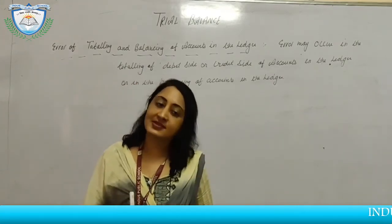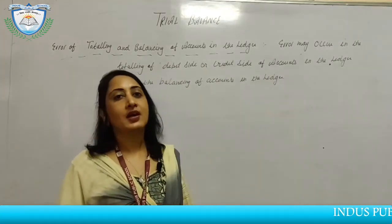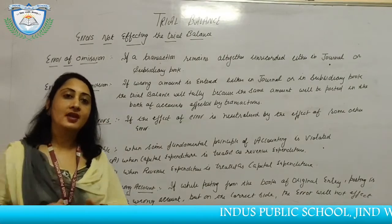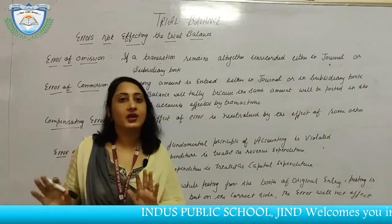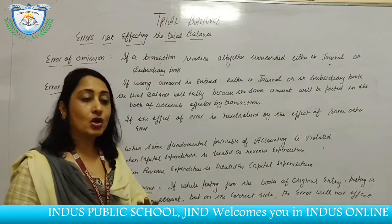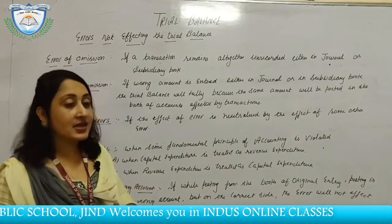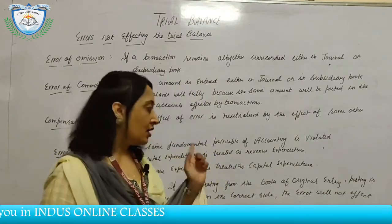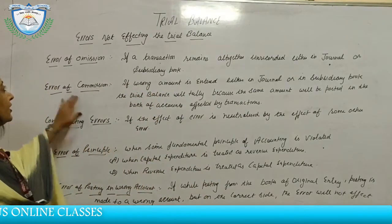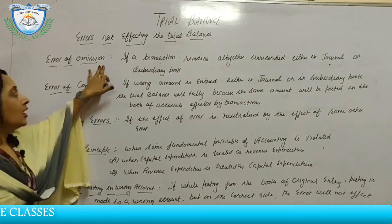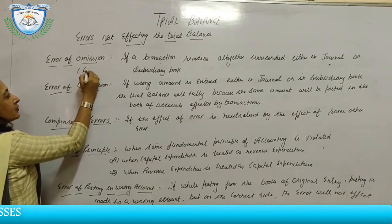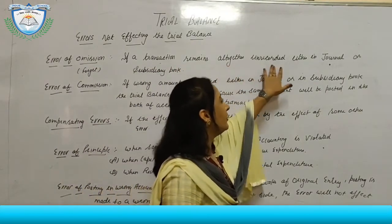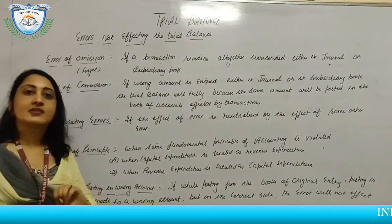Now we will discuss errors which do not affect the trial balance — errors not disclosed by the trial balance. There are some errors which do not affect the trial balance. The first one is error of omission. Omission means to forget. If a transaction remains altogether unrecorded either in the journal or subsidiary book.